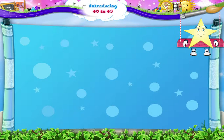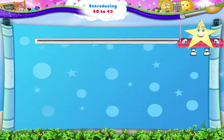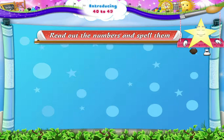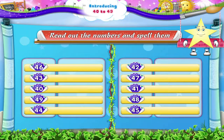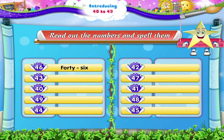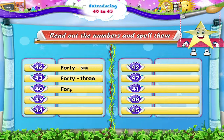Now that we have learnt to count from 40 to 49, shall we do an activity together? Read out the numbers and spell them. 46 — FORTY SIX. The next one is 43 — FORTY THREE. Oh, this is easy! 40 — FORTY.